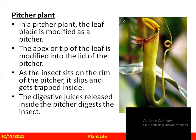In the pitcher plant, the leaf blade is modified into a pitcher shape. The apex or tip of the leaf is modified into a lid of the pitcher. When an insect sits on the rim of the pitcher, it slips and gets trapped inside — the lid automatically closes. Digestive juices are then released inside the pitcher and the insect gets digested.